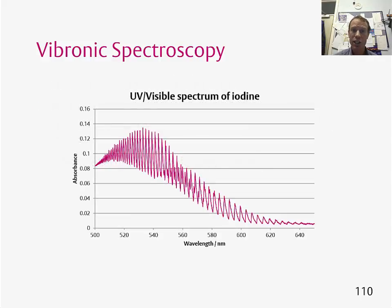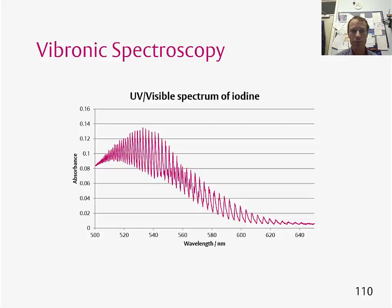This here is the UV-visible spectrum of iodine — there are lots of peaks in here, and each of these peaks corresponds to a particular vibrational transition within the molecule. If you were to measure a spectrum like this, you need to work out what all these peaks correspond to, and you can do this on a diagram.